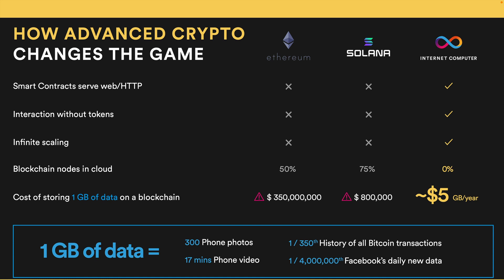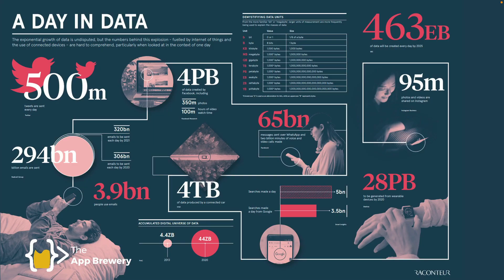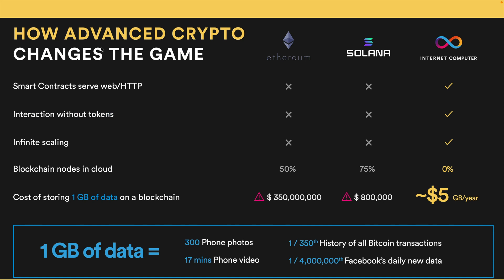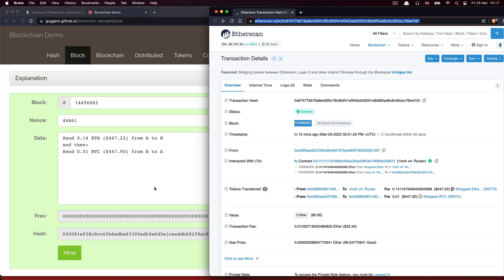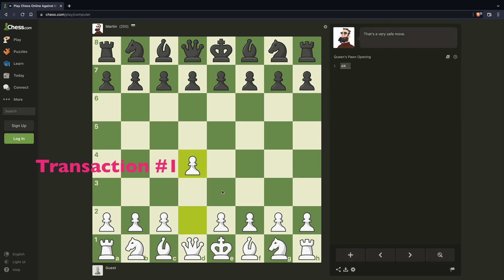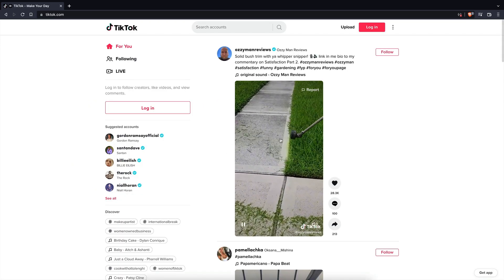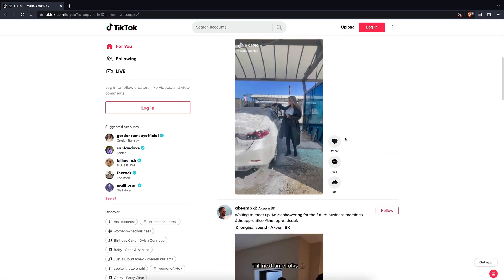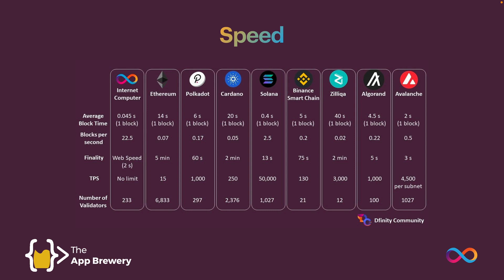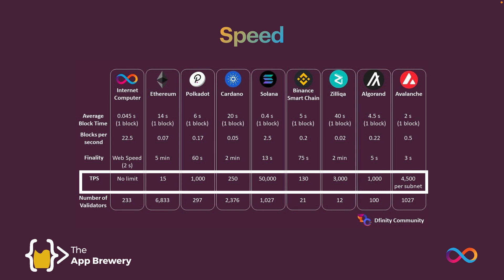A gigabyte of data is roughly 300 phone photos. Going back to that 95 million photos shared on Instagram daily, the cost to store that on-chain would be something like $11 trillion — basically completely unfeasible, which is why nobody creates fully-fledged decentralized applications entirely on-chain. Also, the rate at which transactions can be processed determines how fast a blockchain-based app can run. Each new post in a decentralized social media app is a transaction, so the blockchain's TPS directly limits how many posts your users can make.